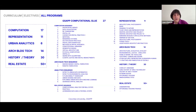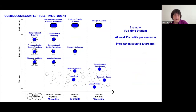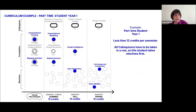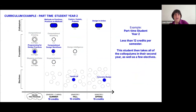Beyond computation electives, there are also representation sequence classes, history and theory, and classes you can take even outside of the department and school. For a full-time student, you take the three foundation classes, three colloquiums, and a range of electives. For part-time students, we encourage you to do foundation and elective classes first, then the three colloquiums sequentially in the next year, as they build in expertise and can't be taken out of sequence.